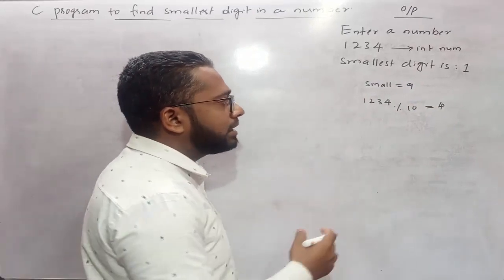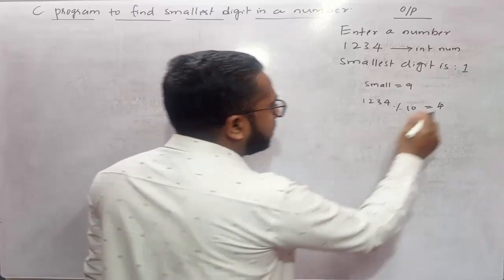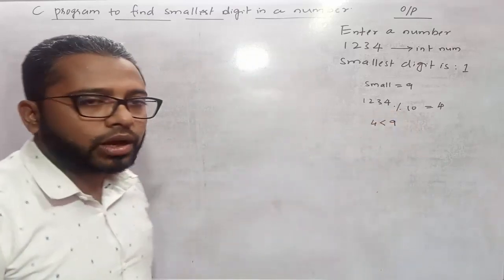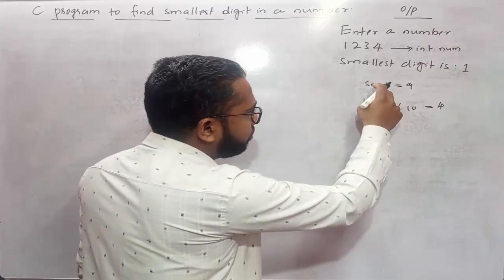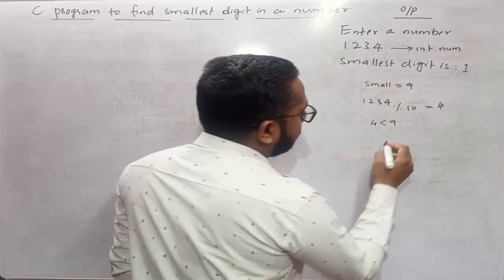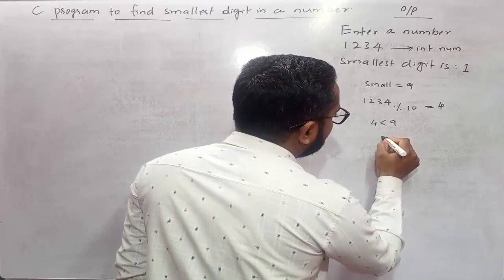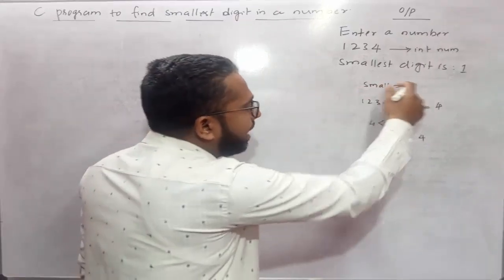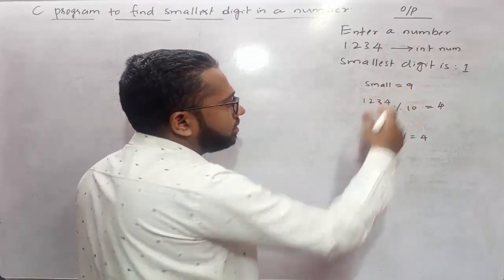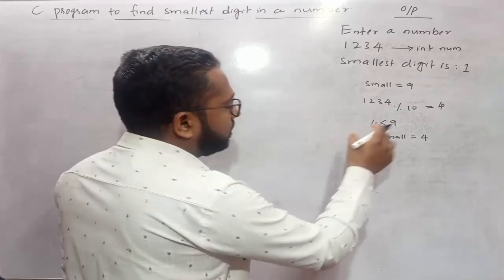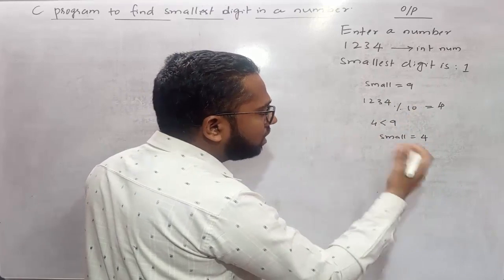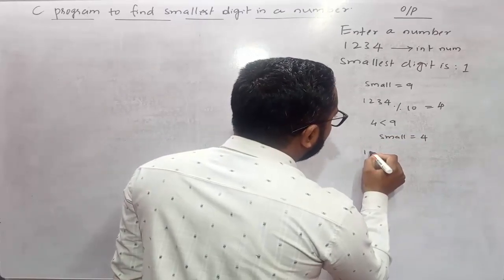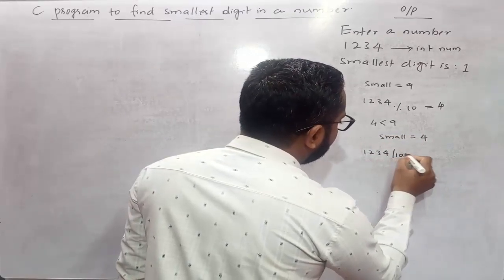Then we check whether the digit 4 is less than our assumed `small` value of 9. Since 4 is less than 9, we set `small` equal to 4. Our `small` value gets updated — it was 9 and now it becomes 4. Next, we divide 1234 by 10 and get 123.